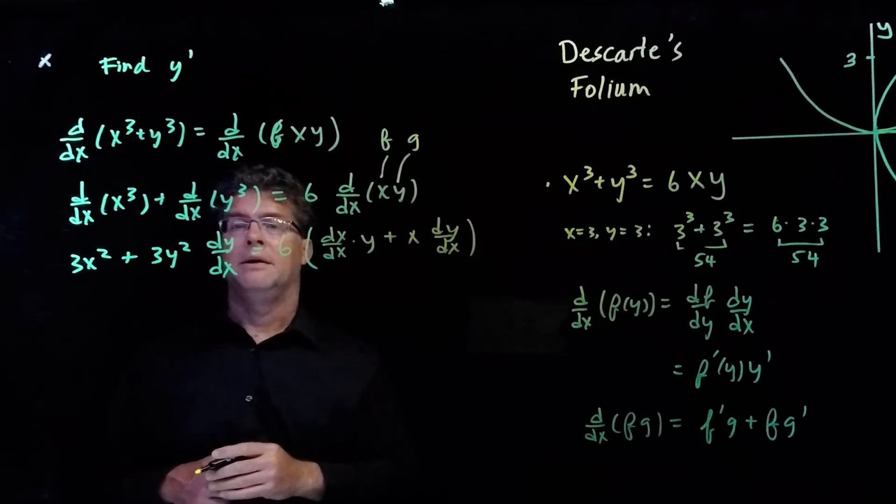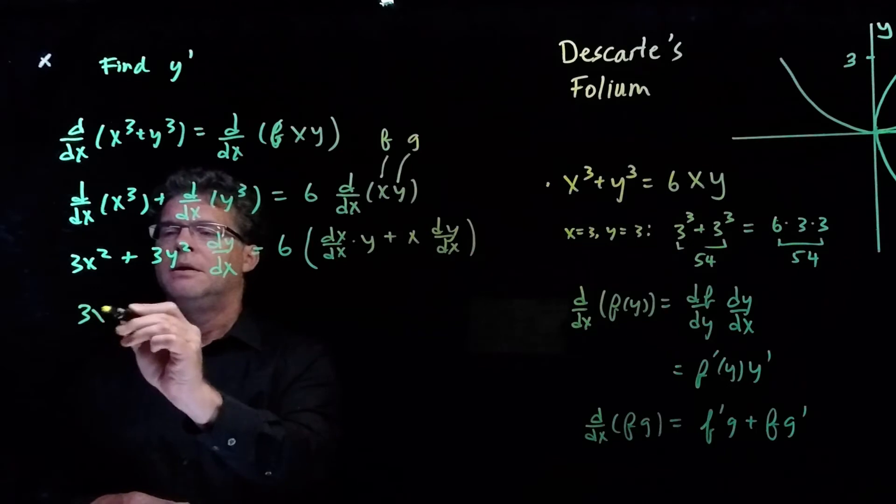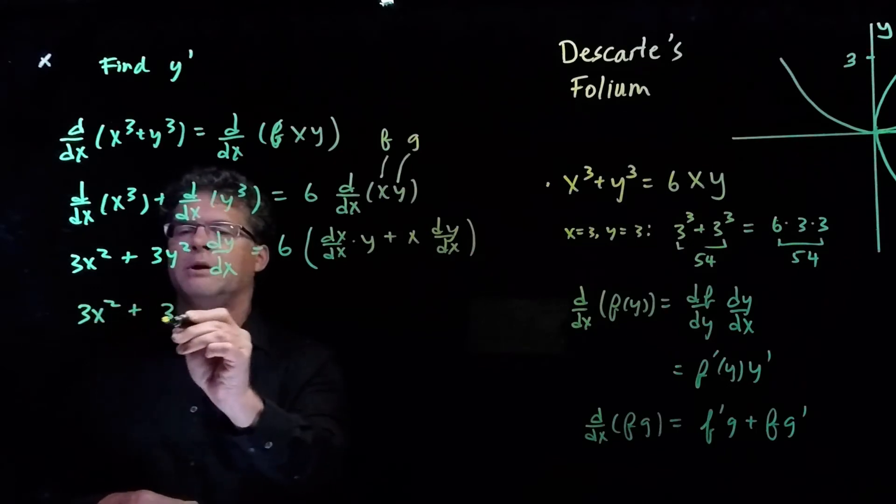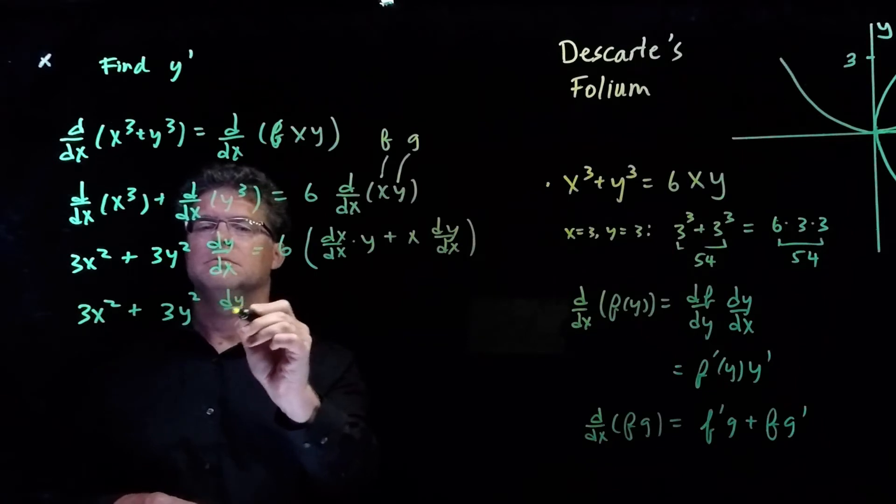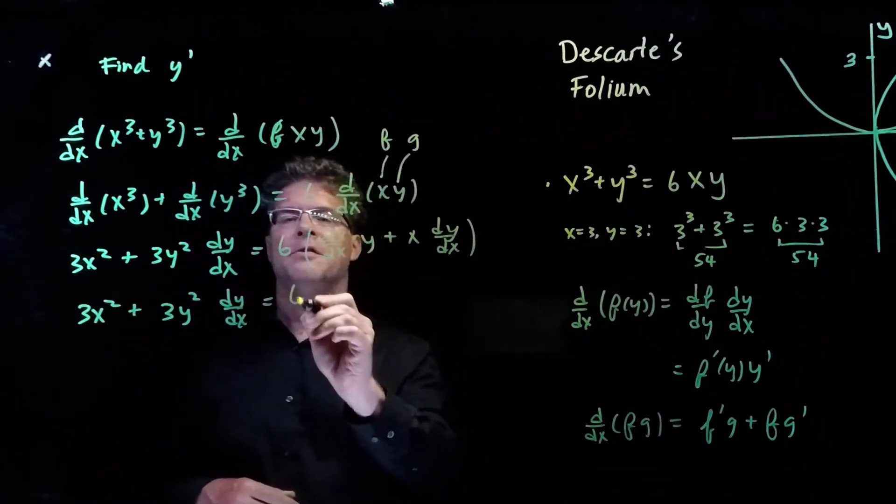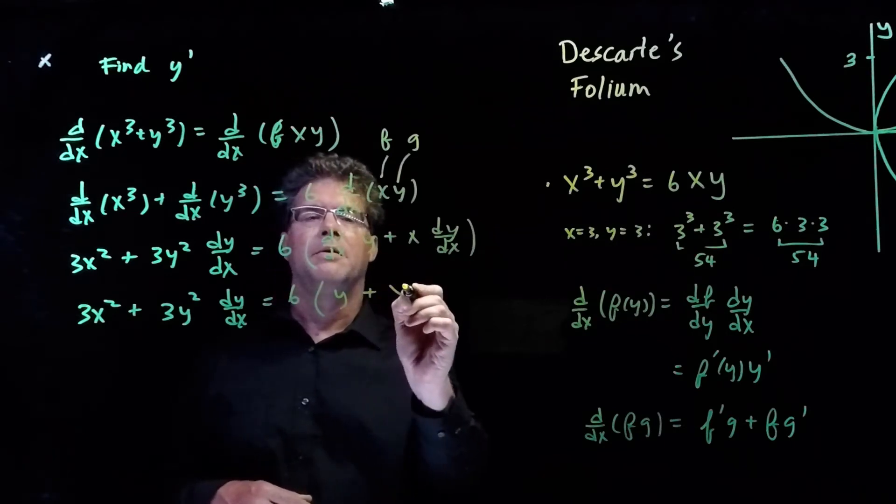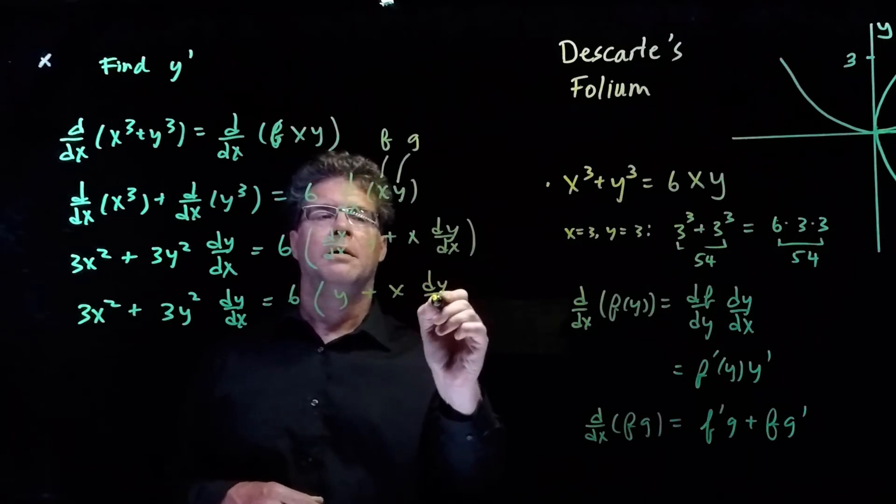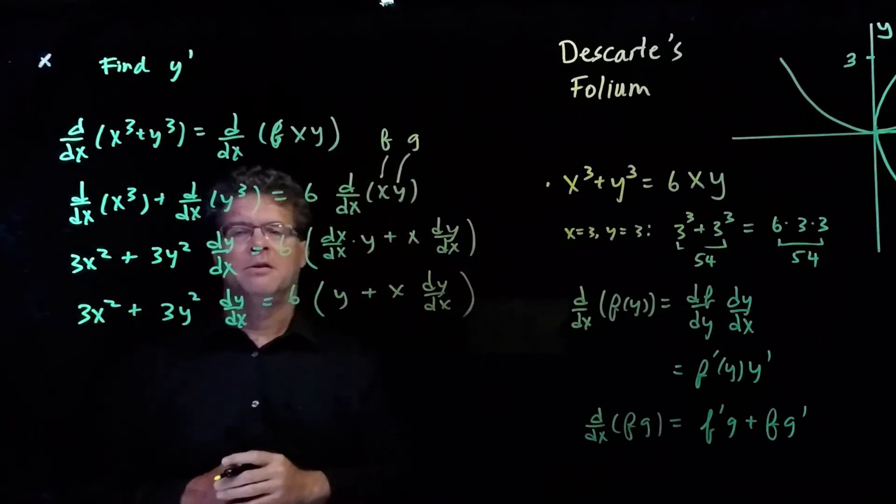So we need to do one more line here before we group like terms. dx/dx is equal to 1. So we just have y plus x times dy/dx in the brackets.